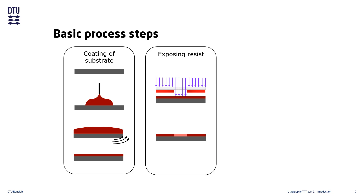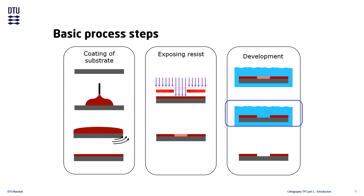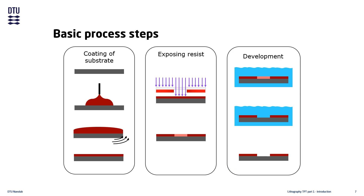The final step is development of the exposed resist to reveal the transferred pattern. In this step the resist is put into a developer solution which dissolves part of the resist and leaves behind the mask pattern. The dissolved part can either be the exposed resist or the unexposed resist, depending on the type of resist used. The whole process ends with a substrate that now has a copy of the pattern from the photomask.